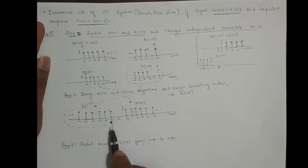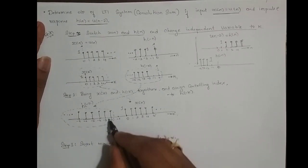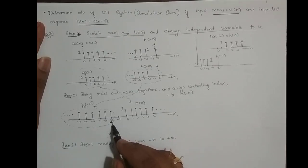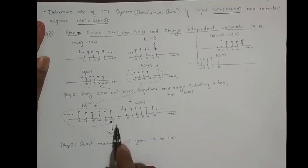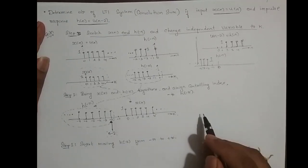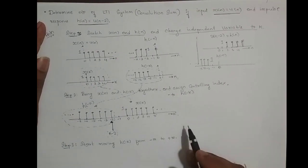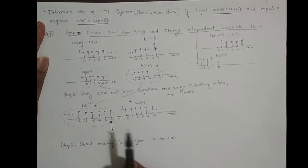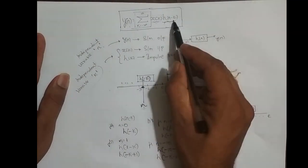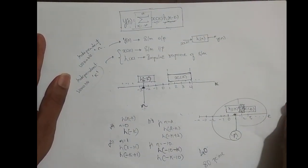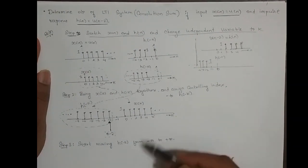Once you assign the controlling index, you have the liberty to move the slider anywhere you want. In Step 3, I need to start moving my h(-k) sequence from minus infinity to plus infinity, to decide where the overlapping regions of h(-k) and x(k) are, so that I can take the sum of products for the overlapping portion, as explained in the previous video. We will continue to solve this problem in the next video.